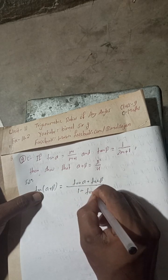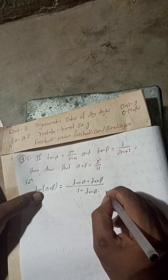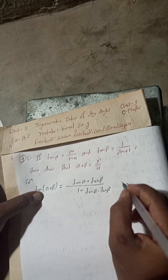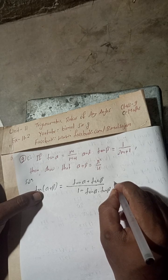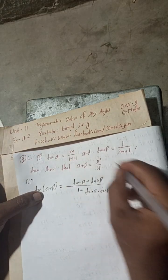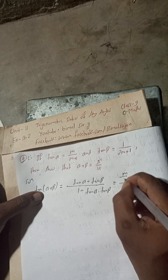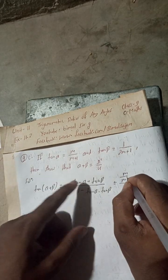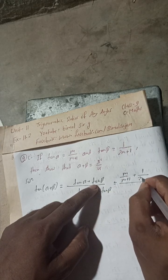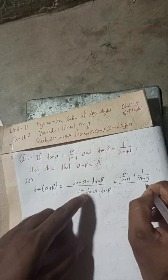This is equal to, here tan α is m/(m+1) plus tan β is 1/(2m+1), divided by 1 - tan α which is m/(m+1) into tan β which is 1/(2m+1).